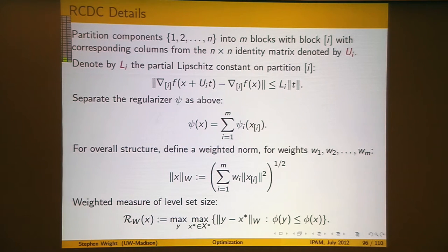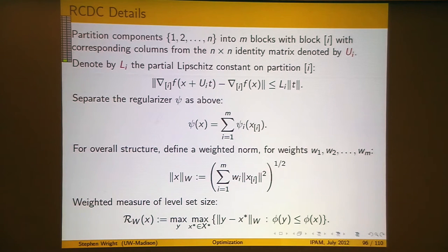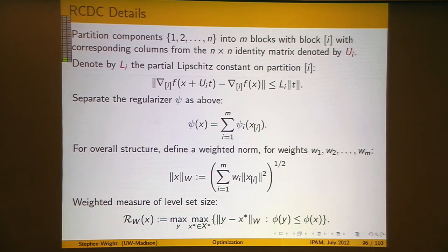The notation gets a little hairy but isn't too bad. I'm going to assume you've got a norm on each block, and you can combine the norms for each individual block into an overall norm on x by applying some weights, summing them up, and taking the square root. You get the overall 2-norm of x by setting all the weights to 1. We need a little flexibility in how we weight the different components to analyze some of these methods.